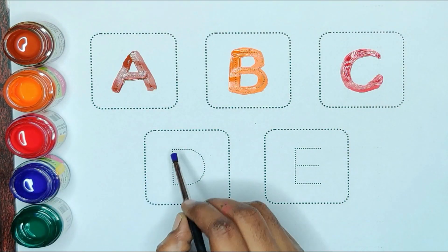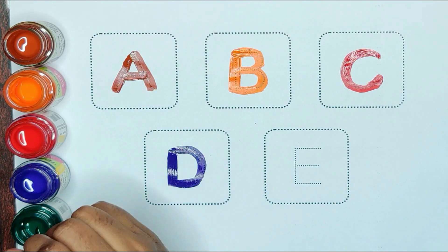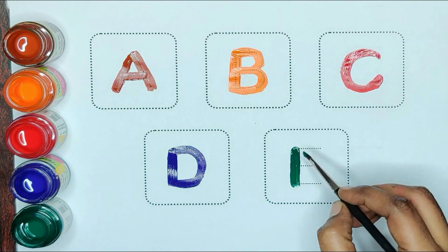Blue color, D. D for dog. Green color, E. E for egg.